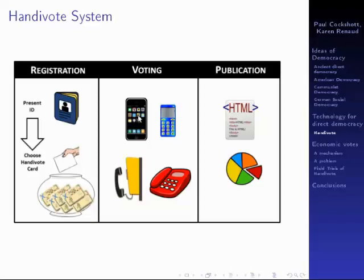Voting itself can be done using either simple Nokia phones, smartphones, or in principle — though we've never tried this — landlines. At the end of the vote, all the results are shown and the votes are all inspectable by the general public to verify that results have been correctly tallied.